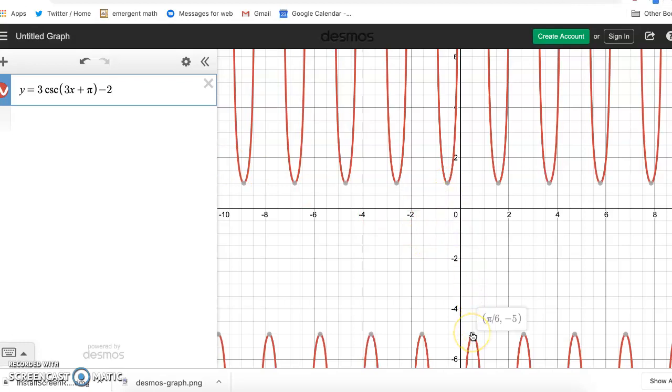So the range consists of every single number except for this gap from one to negative five. So again, how we got there: we started with just the regular function which had a gap from one to negative one, we amplified that by three which multiplied that gap by three, and then we subtracted two which moves it down.